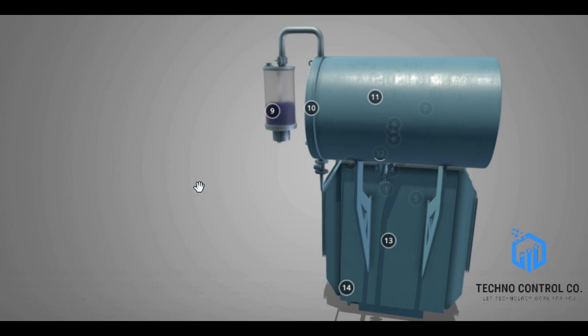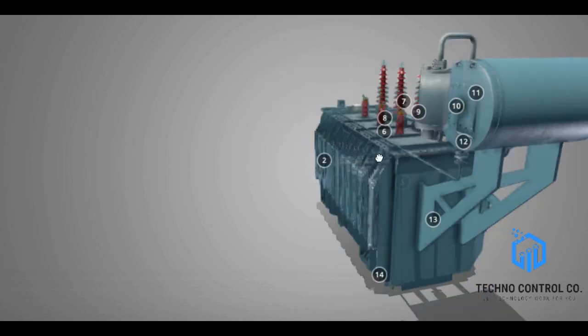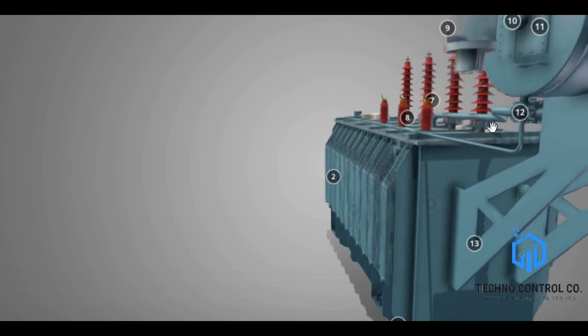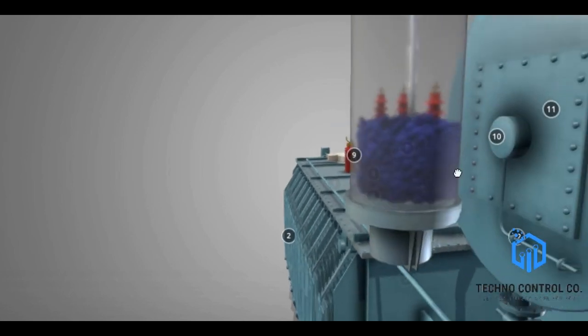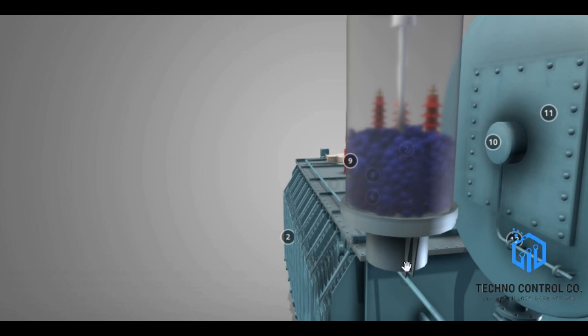Well now, what happens when the transformer cools down? As you can see right over here, let's take a closer look. When the air moves in, this small cylinder has an oil trap. It removes the dust particles from the air and makes sure clean air moves through the silica gel.